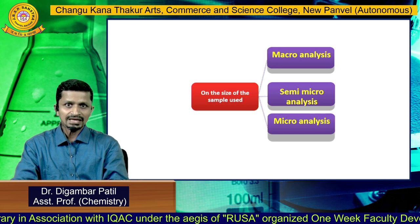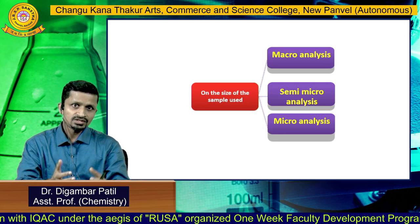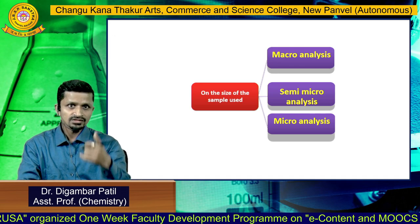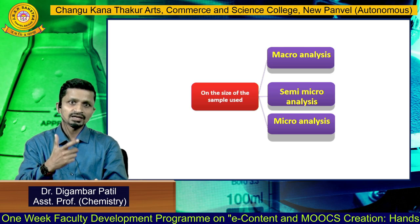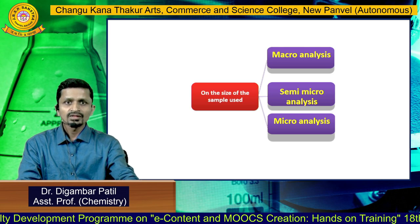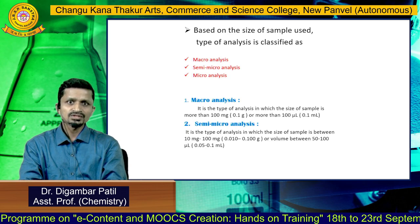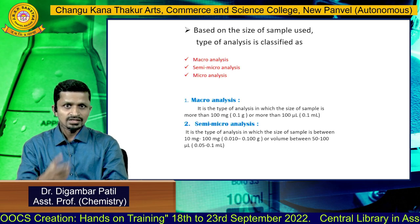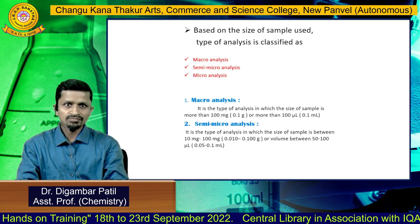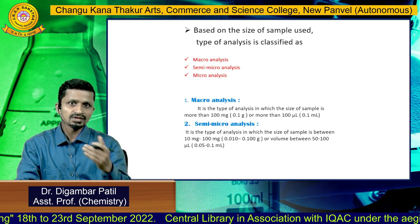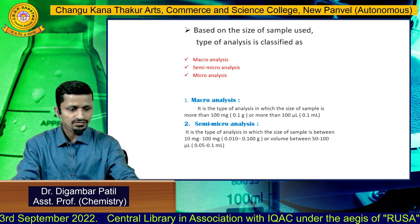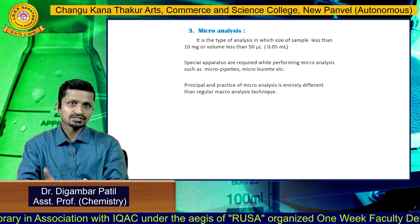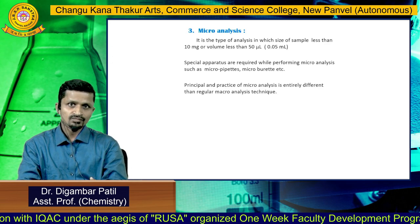The second main classification of chemical analysis is based on the size of the sample used. On this basis, analysis is classified into three types: macro analysis, semi-micro analysis, and micro analysis. Macro analysis uses a sample size of more than 100 mg (more than 0.1 g). Semi-micro analysis uses a sample between 10 mg and 100 mg. Micro analysis uses a sample of less than 10 mg.